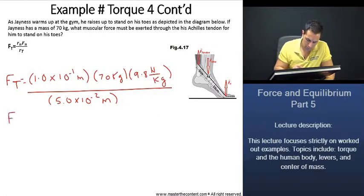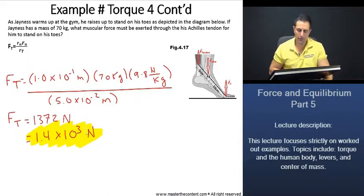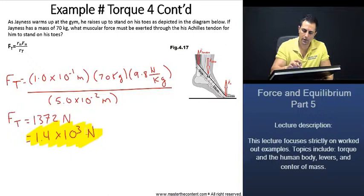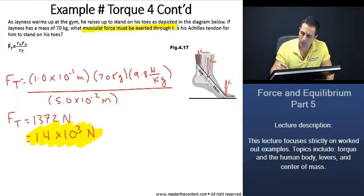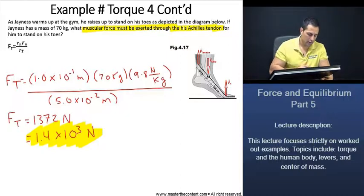That is going to end up actually equaling 1,372 newtons, and that we can write as 1.4 times 10 to the power of 3 newtons. There we are. That is what we're looking for. That there is the muscular force that must be exerted through Janus's Achilles tendon. Now, let's move on to our next slide.